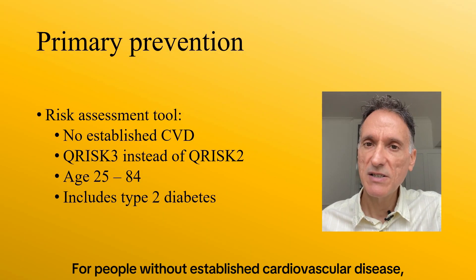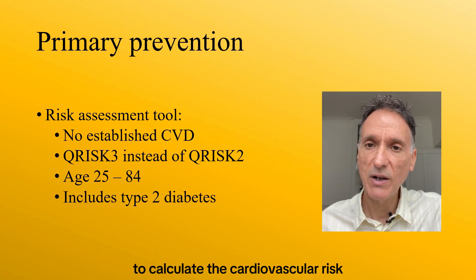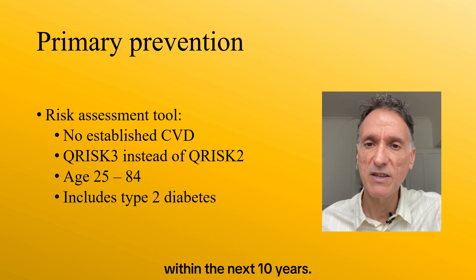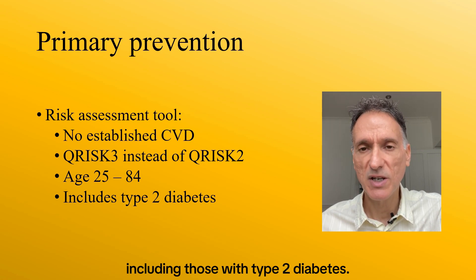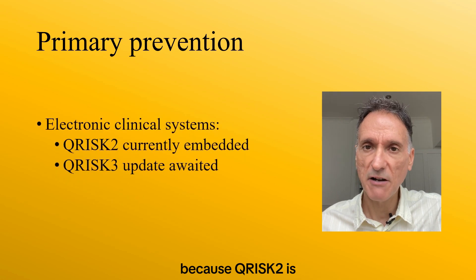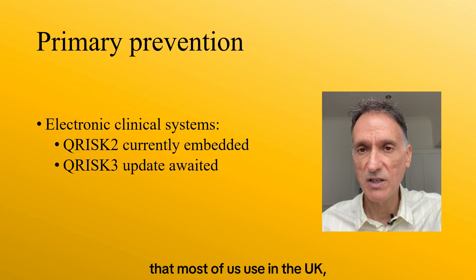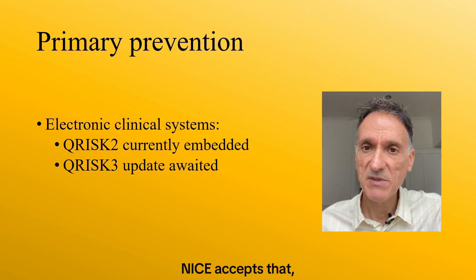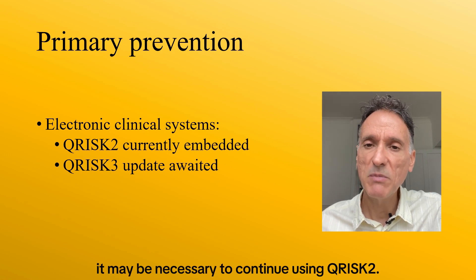For people without established cardiovascular disease, we're now advised to use QRISK-3 instead of QRISK-2 to calculate the cardiovascular risk within the next 10 years. We will do this for those aged between 25 and 84, including those with type 2 diabetes. Because QRISK-2 is currently embedded in the electronic clinical systems that most of us use in the UK, NICE states that until the clinical software systems are updated with QRISK-3, it may be necessary to continue using QRISK-2.